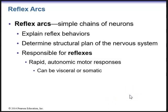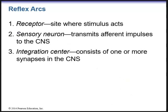Reflex arcs are simple chains of neurons that help explain reflex behaviors and determine the structural plan of the nervous system. Reflex arcs are responsible for our reflexes — these are rapid autonomic motor responses, which can be either visceral or somatic. There are five components of a reflex arc. First, you have the receptor — the site where the stimulus acts. For example, in the patellar reflex, the receptor is the patellar tendon, tapped by a reflex hammer.